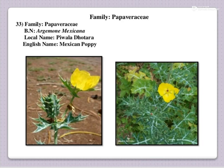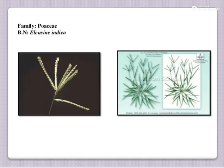The next one: local name is Pula Dhotra. This is a common weed. English name is Mexican poppy and botanical name is Argemone mexicana, family Papaveraceae. This is also called a poisonous weed, very harmful to human health. Next, Poaceae — botanical name is Eleusine indica.